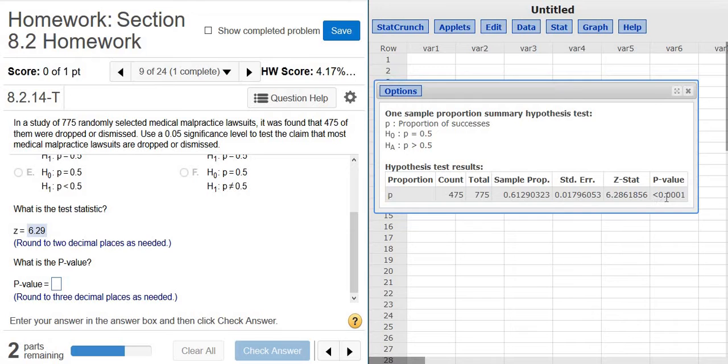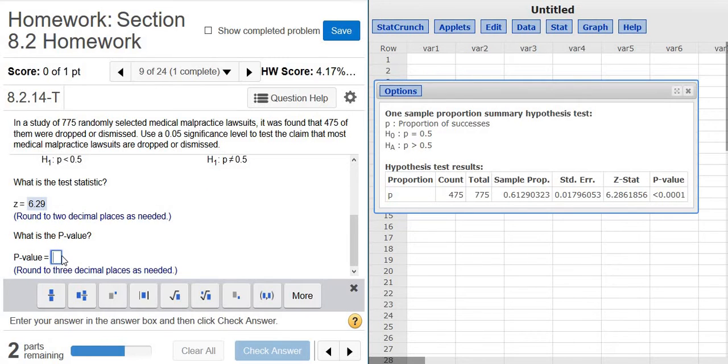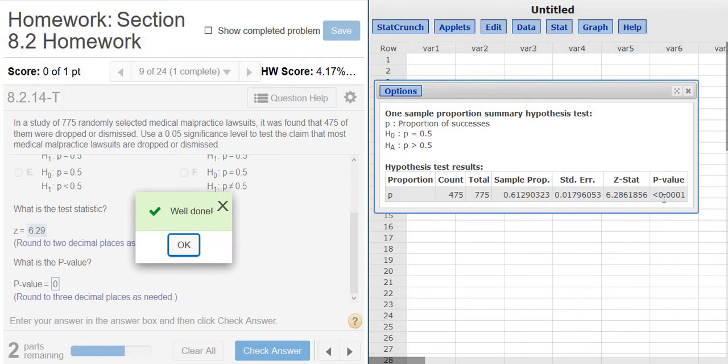What is the P value? It says it's less than 0.0001. So it's pretty much 0. So I'm going to put 0. Whenever you see that, you can just put 0. If it ever says less than 0.0001, just put 0.